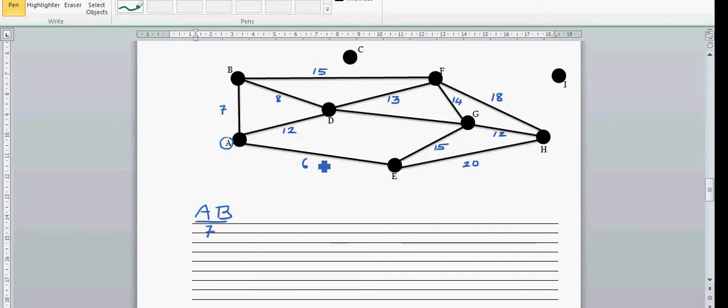Then I'll go from B to F. Not C, because C cannot be traversed. It's B to F. How much time does it take? That is 15, so write the number 15 on top.